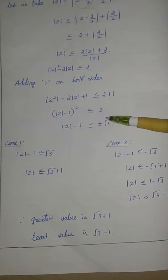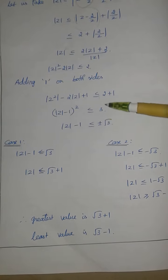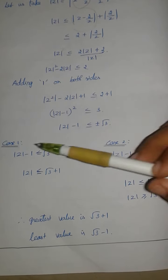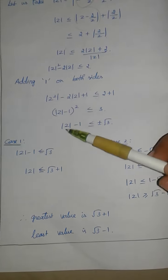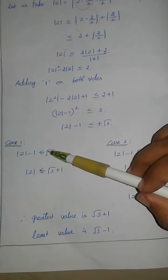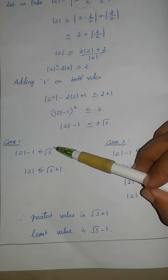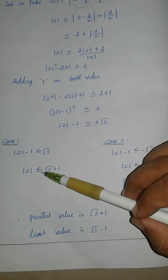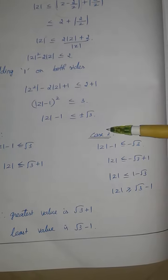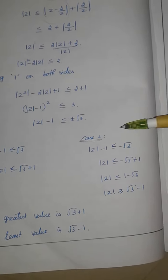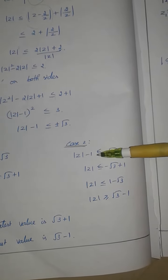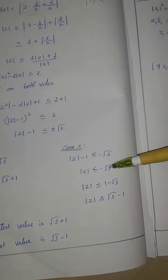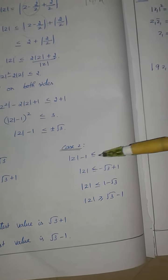Taking the square root gives mod Z minus 1 less than or equal to plus or minus root 3. Case 1: mod Z minus 1 less than or equal to plus root 3, which gives mod Z less than or equal to root 3 plus 1.